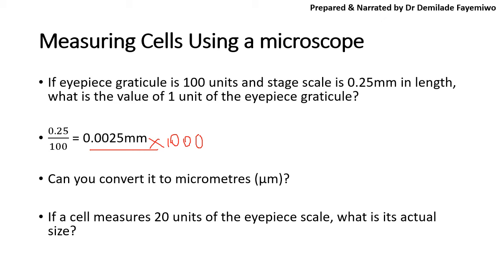Now, let's try to do a real problem. If a cell measures 20 units on the eyepiece scale, what is its actual size? Now, remember we said that one unit of the eyepiece graticule is this much in millimeters. So 20 units would simply be this, and I'm going to erase that 1000 over there. 20 units would simply be that value over there times 20, right? Because this is the value for one. And whatever answer we get, we can then put in there. You can try to compute that problem and also convert it to micrometers just so you practice your conversions again because this here is in millimeters.